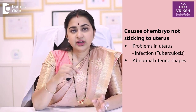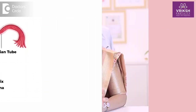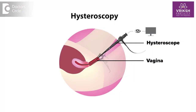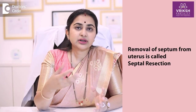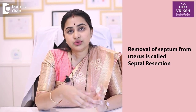The same way, some people have a septum in the uterus, which we call a uterine septum. If something like that is present, we may have to go through the vagina into the uterus through a procedure called hysteroscopy and remove that septum, which is called septal resection.